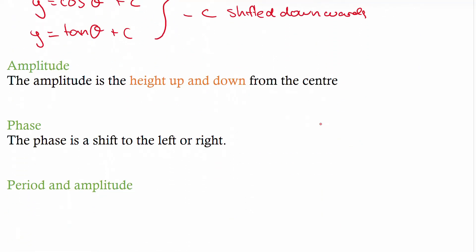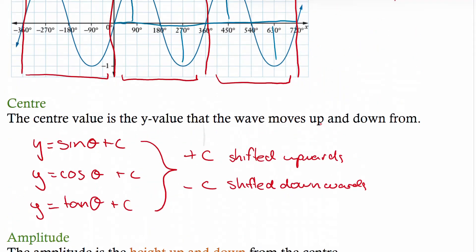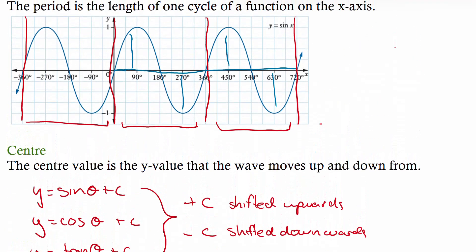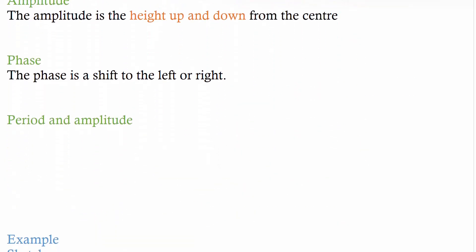Amplitude is the height going up and down from the center. In this example the amplitude is the distance from the center up to the peak — it goes up one and down one, so the amplitude is one. Your phase is the shift to the left or right.